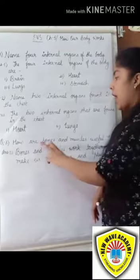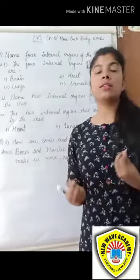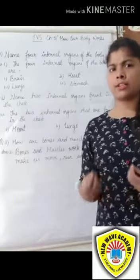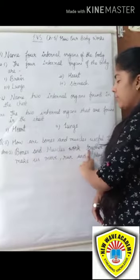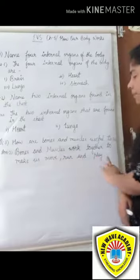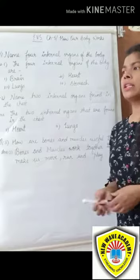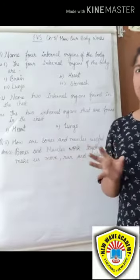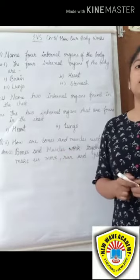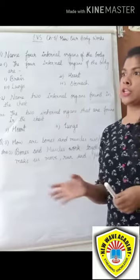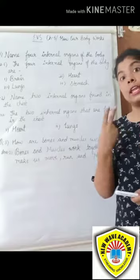Question number 3: How are bones and muscles useful to us? Answer: Bones and muscles work together to make us move, run and play. Bones and muscles both work together so that our body can move well, and we can run and play.